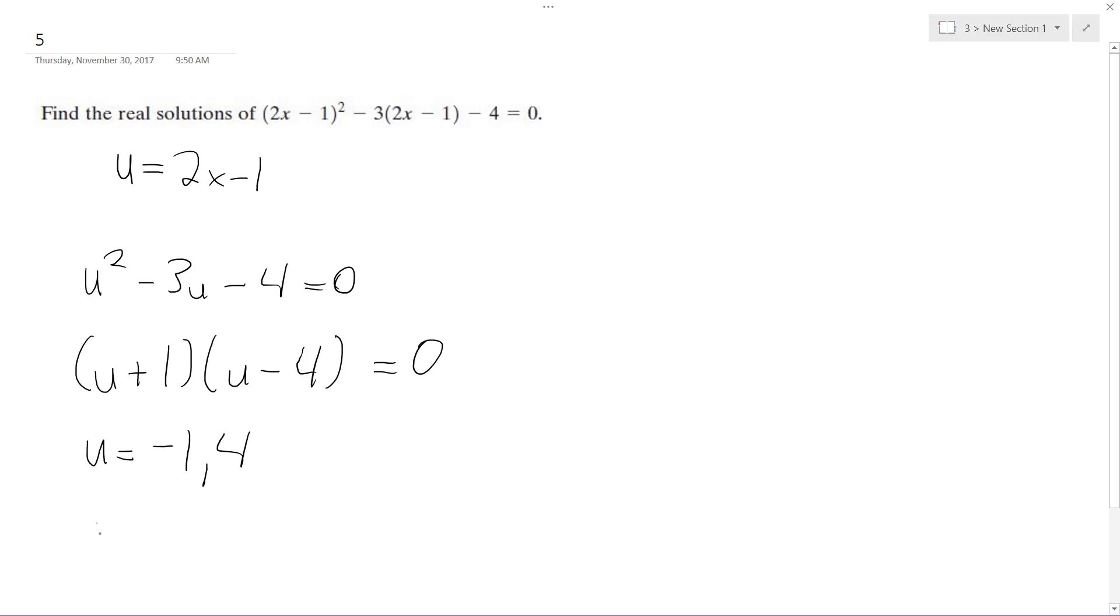So we get 2x minus 1 is equal to negative 1, and then we get 2x minus 1 is equal to 4. Alright, so over here, plus 1 plus 1, 2x equals 0, x equals 0.